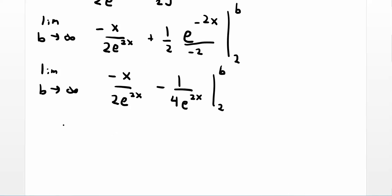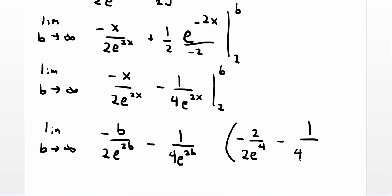So I'm going to plug in: limit as b goes to infinity of negative b over 2 e to the 2b minus 1 over 4 e to the 2b. This is minus negative 1 over 2 e to the 4th minus 1 over 4 e to the 4th. This is minus.